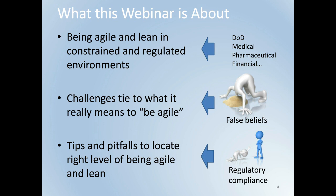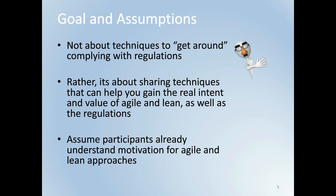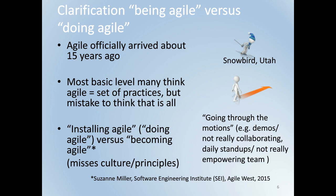It's important to understand that the goal of this webinar is not to help you get around the regulations. Rather, it's to share techniques that can help you gain the real intent and value of agile and lean as well as the regulations. I want to clarify one key point related to the phrases 'being agile' versus 'doing agile.' Agile methods first officially arrived close to 15 years ago with the famous meeting in Snowbird, Utah, where the agile manifesto was signed by 17 leading software methodologists. Agile methods have actually been around much longer as they are based on grassroots efforts proven to work even going back 30 to 40 years.